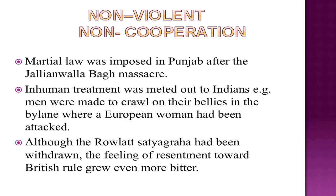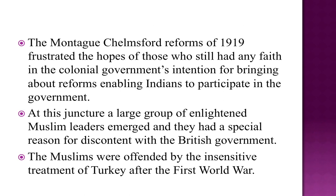This brutal incident was followed by even more brutal repression. Martial law was imposed in Punjab after the Jallianwala Bagh massacre. Inhuman treatment was meted out to Indians — for example, men were made to crawl on their bellies in the by-lane where a European woman had been attacked. Although the Rowlatt Satyagraha had been withdrawn, the feeling of resentment towards British rule grew even more bitter. The Montague-Chelmsford reforms of 1919 frustrated the hopes of those who still had any faith in the colonial government's intention for bringing about reforms enabling Indians to participate in the government.